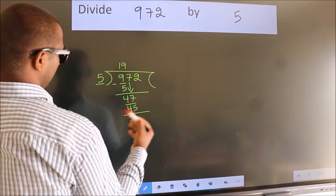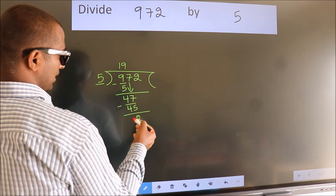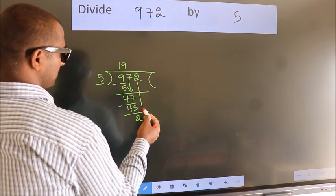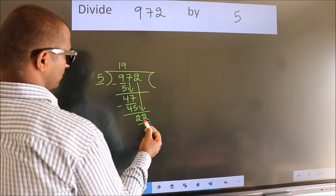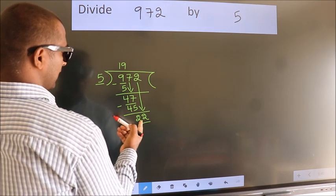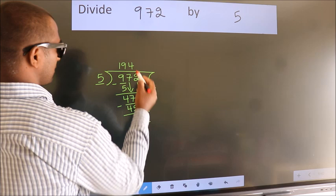Now we subtract, we get two. After this, bring down the next number, so two down. So twenty-two. A number close to twenty-two in five table is five fours twenty.